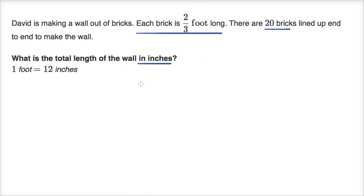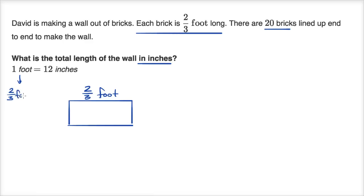They give us the length of each brick in feet — each brick is two thirds of a foot long. So what would this length be in inches? We can look at the conversion between feet and inches. If I go from one foot to two thirds of a foot, I've multiplied by two thirds. So if one foot is 12 inches and I want to know how many inches two thirds of a foot is, I would multiply by two thirds again — multiplying both sides of this conversion by two thirds.